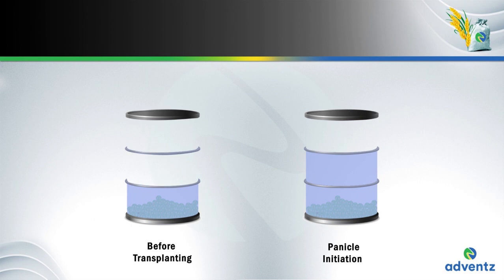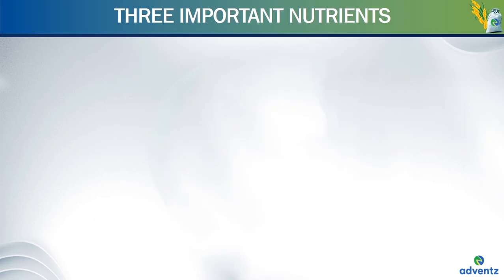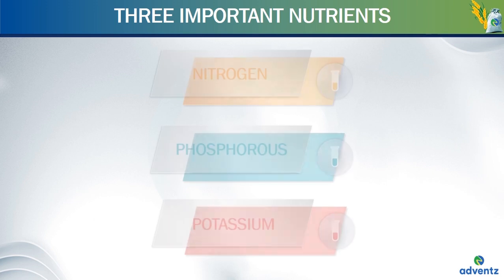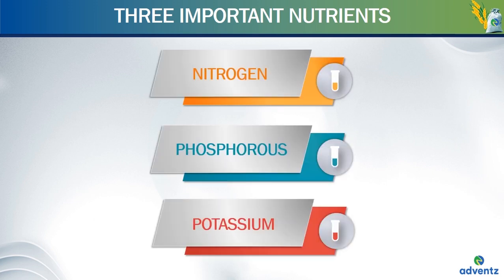The planting season — that is, at what time the crop is planted — and the planting areas, which are the geographical location of the plantations, determines the quantity requirement of three important nutrients: nitrogen, phosphorus and potassium. Different seasons and different climatic zones require different amounts of nitrogen, phosphorus and potassium.